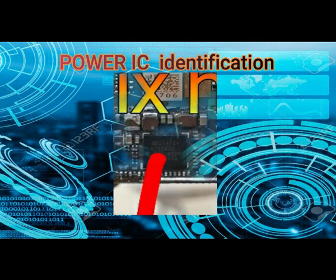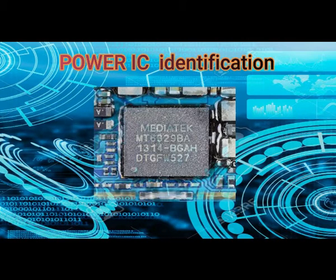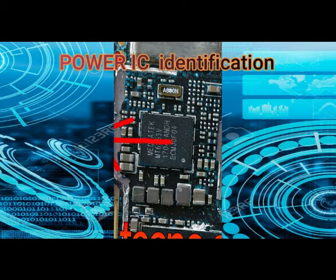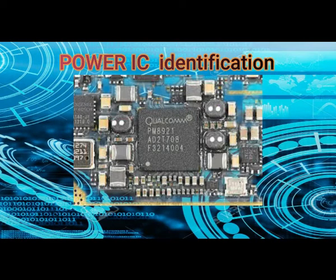For Power IC identification, you will observe that the Power IC normally has many brown capacitors, resistors, and a good number of coils of varied shapes and sizes, which help in proper and accurate distribution of current needed for healthy functioning. Look at those images well and you will be able to identify the Power IC on any mobile PCB.